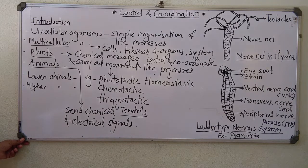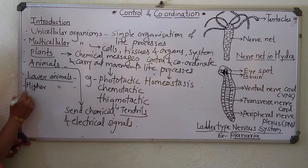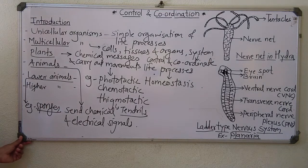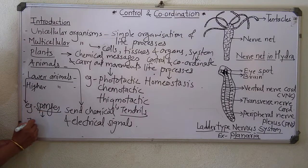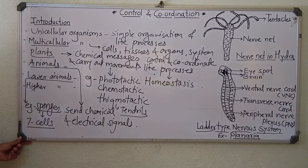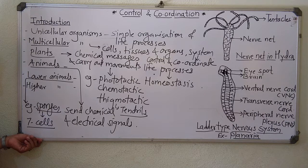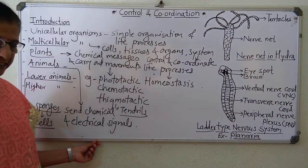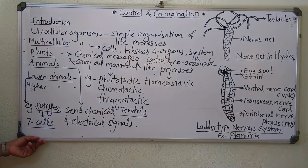In lower animals, like sponges — for example, phylum Porifera, which includes sponges like Sycon — there are seven different types of cells present, and they bring about different functions such as digestion, excretion, and reproduction. There is a group of such cells, and they bring about control and coordination.